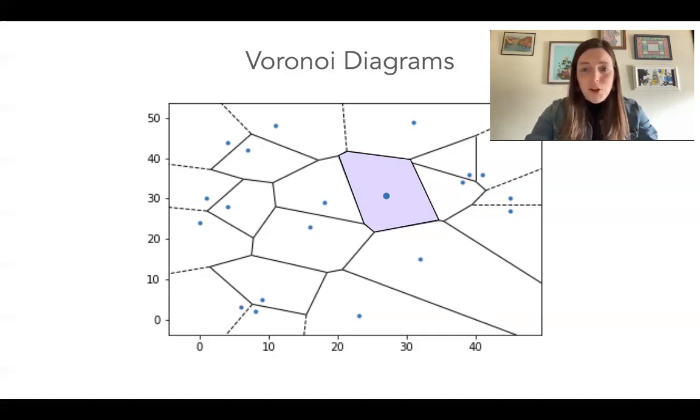And one thing to note is that Voronoi diagrams, we can apply it to any metric space, any metric space and any suitable metric, you can have a Voronoi diagram. I'm just going to focus on the plane R2 and the standard Euclidean distance.